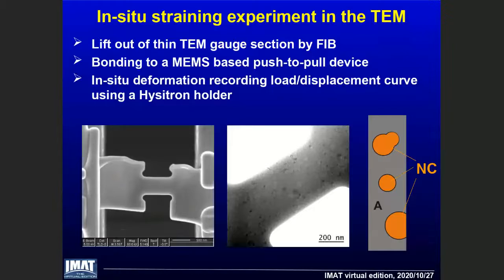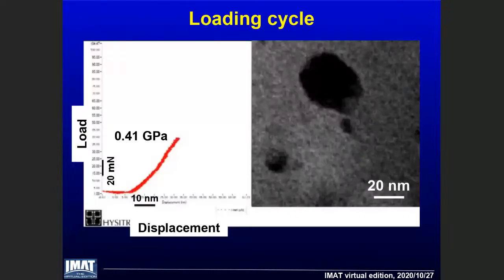In our experiment, stress is applied using methods of in-situ straining performed inside the transmission electron microscope. The in-situ straining experiment is applied to tiny dog bone-shaped specimens. The important message is that structural changes observed upon loading can be recorded simultaneously with a load-displacement curve, which, if the gauge length and cross-sectional area of the sample are known, can be converted to a stress-strain curve. Let's have a look at one of these actual experiments — there are videos taken, but due to the limitations of this online format, I can only show some snapshots.